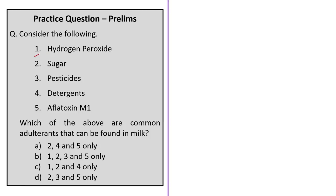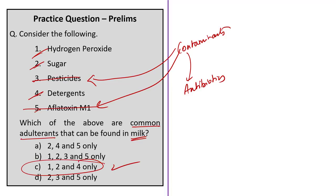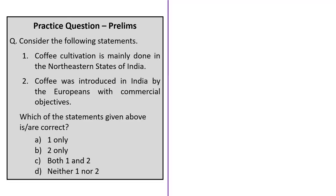The next question gives five substances and asks which are common adulterants found in milk: hydrogen peroxide, sugar, pesticides, detergents, and aflatoxin M1. We discussed that pesticides, aflatoxin M1, and antibiotics are contaminants — not adulterants. So we remove pesticides and aflatoxin M1. The correct answer should contain substances one, two, and four (hydrogen peroxide, sugar, and detergents), making the correct answer option C.